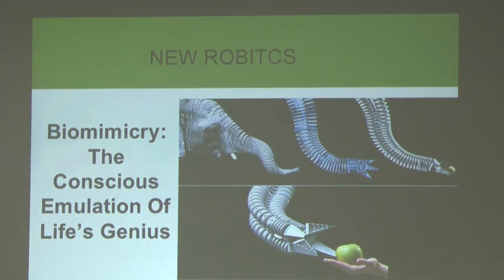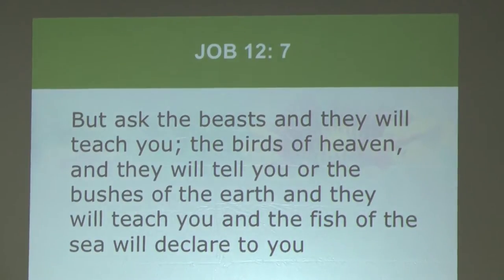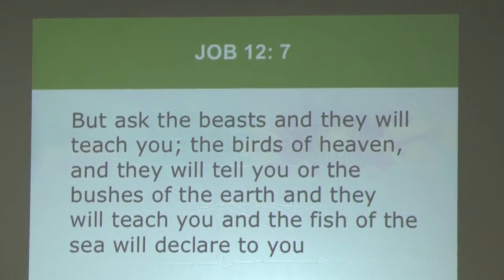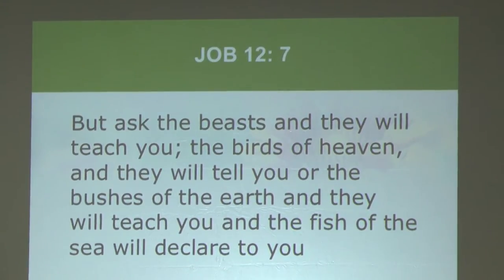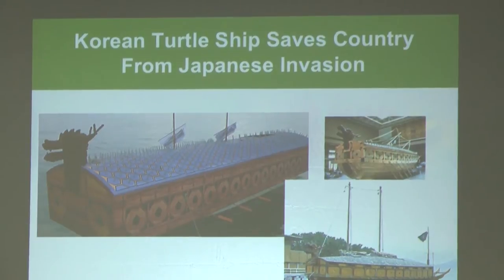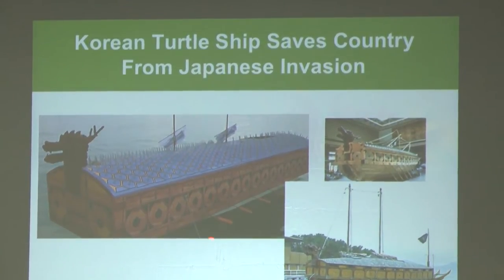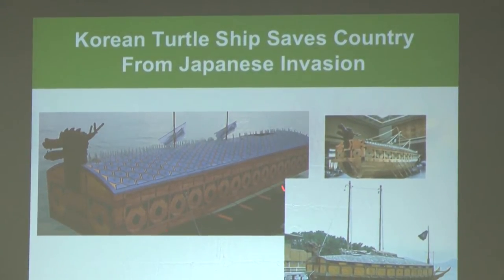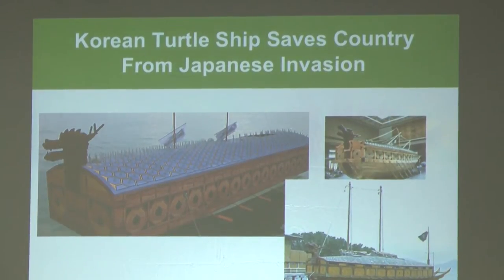Engineers are using termite mound design for air conditioning systems, reducing energy use by 90%. We use elephant trunk structure to build robots. Biomimicry has been around a long time — it's even in the scriptures: 'Ask the beast and they will teach you.' People have won wars because of biomimicry — the Koreans repelled a Japanese invasion with ships shaped like turtles with spikes.